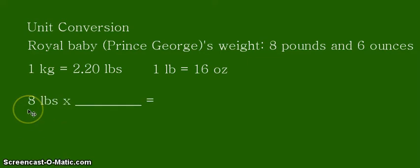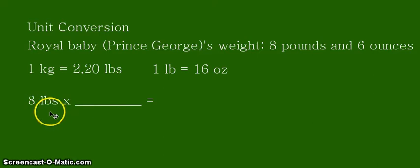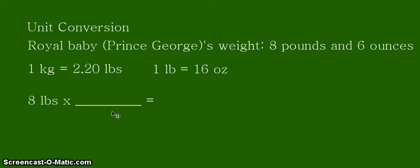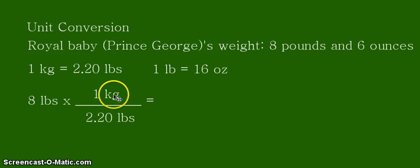We start first with 8 pounds. We need a conversion factor to convert pounds into kilograms, so we will be using the 1 kg = 2.20 lbs equivalence. We need to put the proper units in the proper places for them to be cancelled out. Since we are given the unit in pounds, the denominator of our conversion factor should also be pounds. I have now written the conversion factor, and we can see the pounds cancel out.